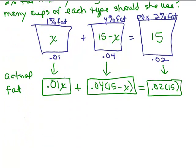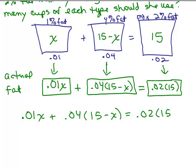I usually just write that without the boxes. 0.01x, the fat from the first container, plus the fat from the second container, 0.04(15-x), is the same as the amount of fat in the final container, 0.02(15).